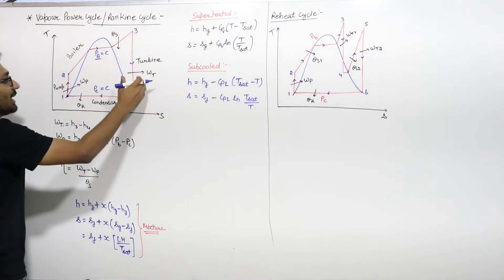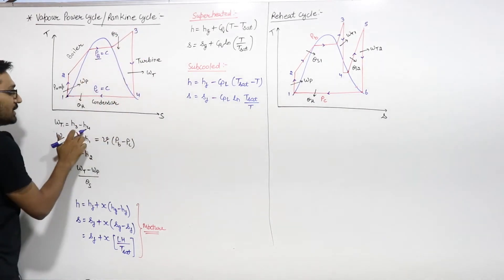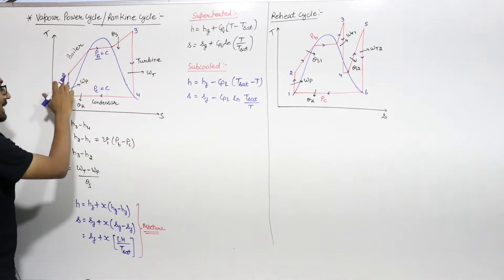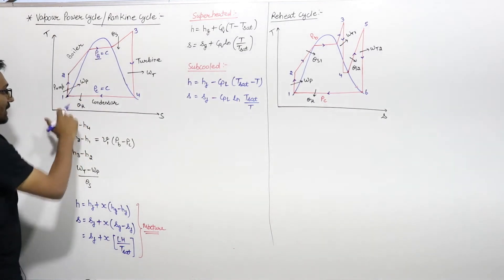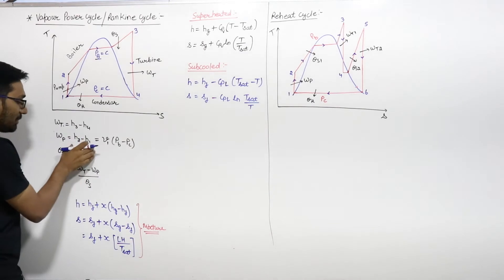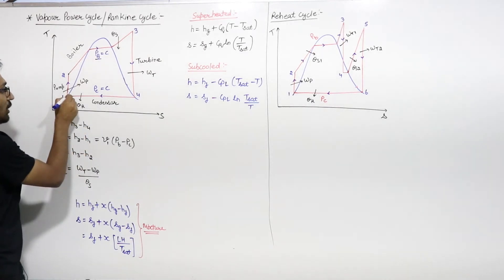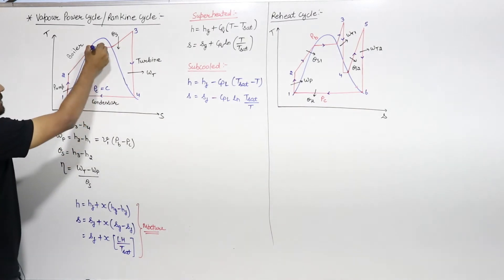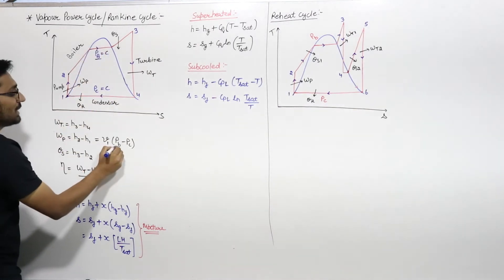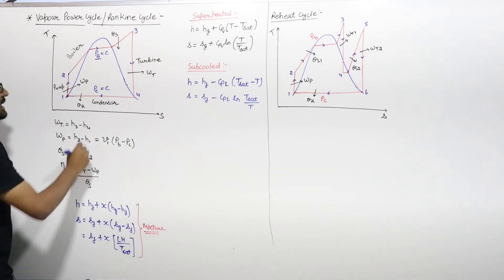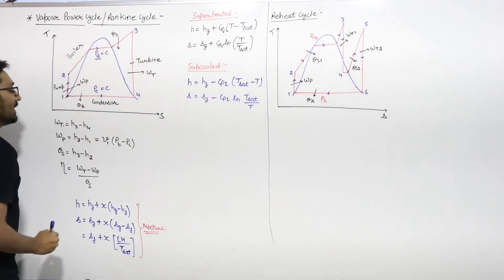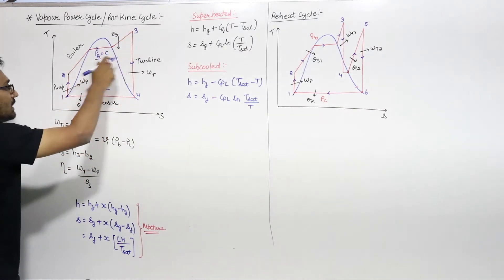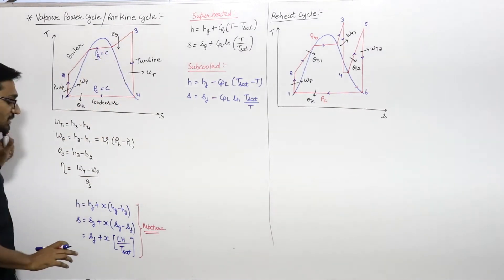Work done by turbine is H3 minus H4. Work required by the pump is H2 minus H1, and you can write pump work as specific volume at that point into the pressure difference PB minus PC. Heat supply will be H3 minus H2, and efficiency will be equal to W-turbine minus W-pump divided by heat supply.